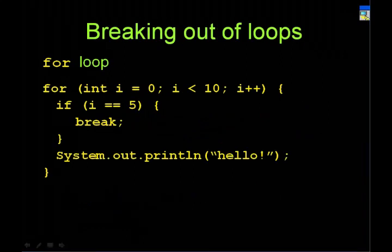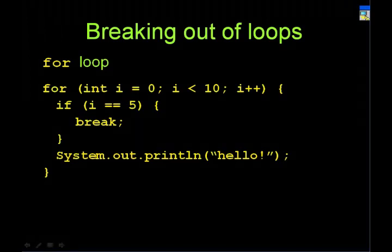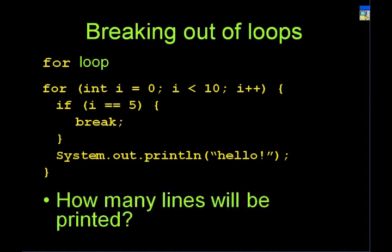The 'break' statement: for 'int i = 0; i < 10; i++', if i equals five — notice I'm using double equals '==' here, not single '='. A single '=' is an assignment operator that just sets i to five; '==' is a comparison operator. So when i equals five, break will stop the loop and jump the program execution out to whatever code comes after the loop. The loop just stops at five. How many lines will be printed?